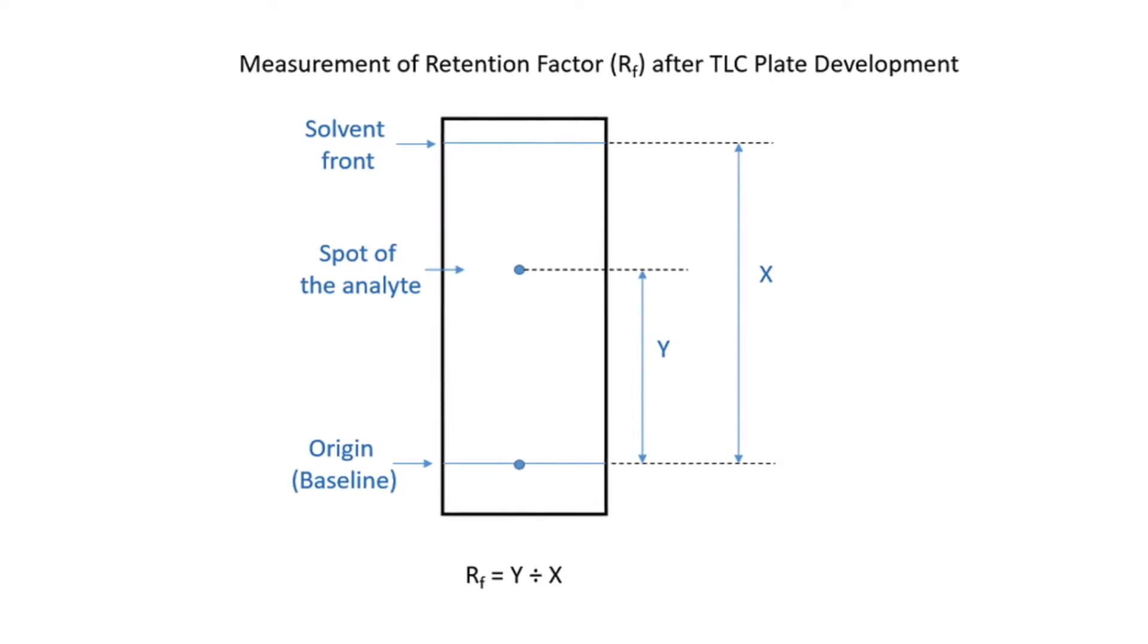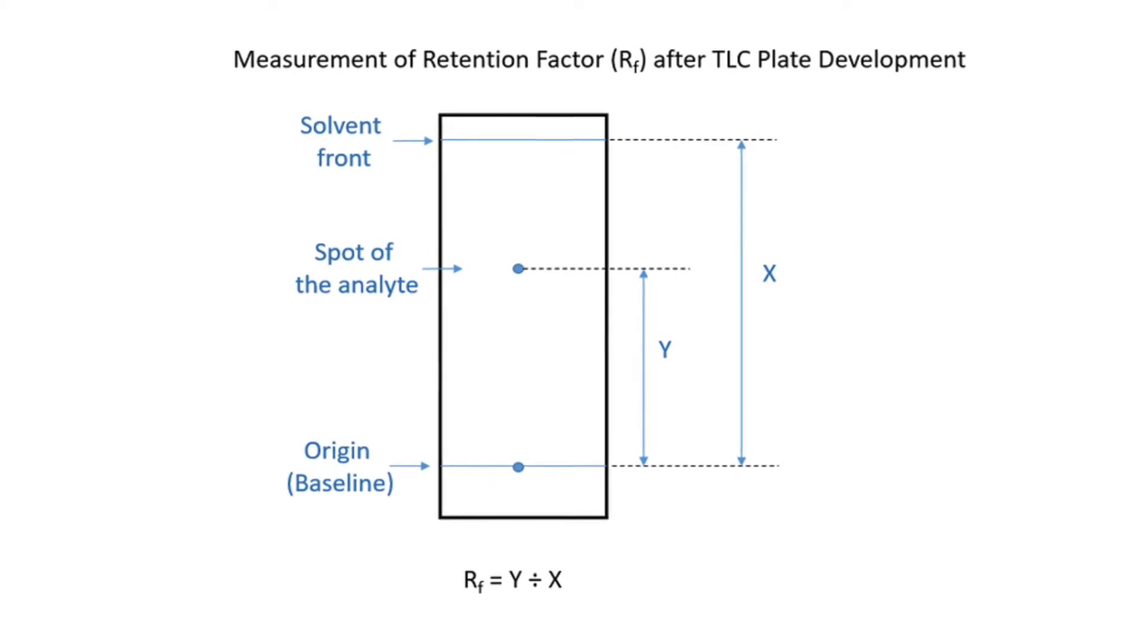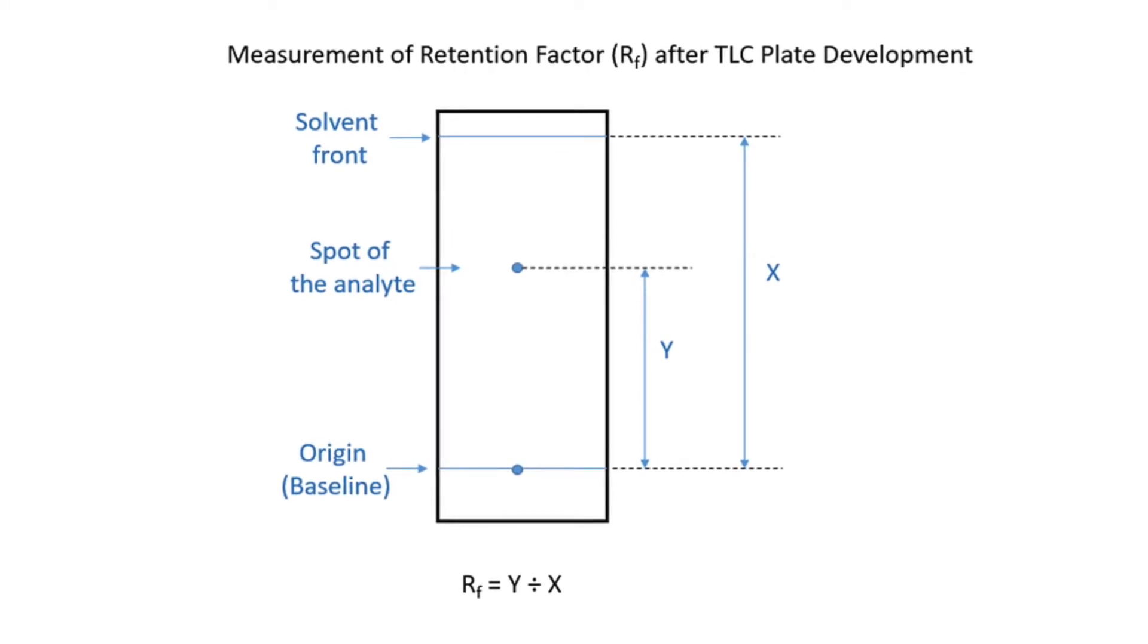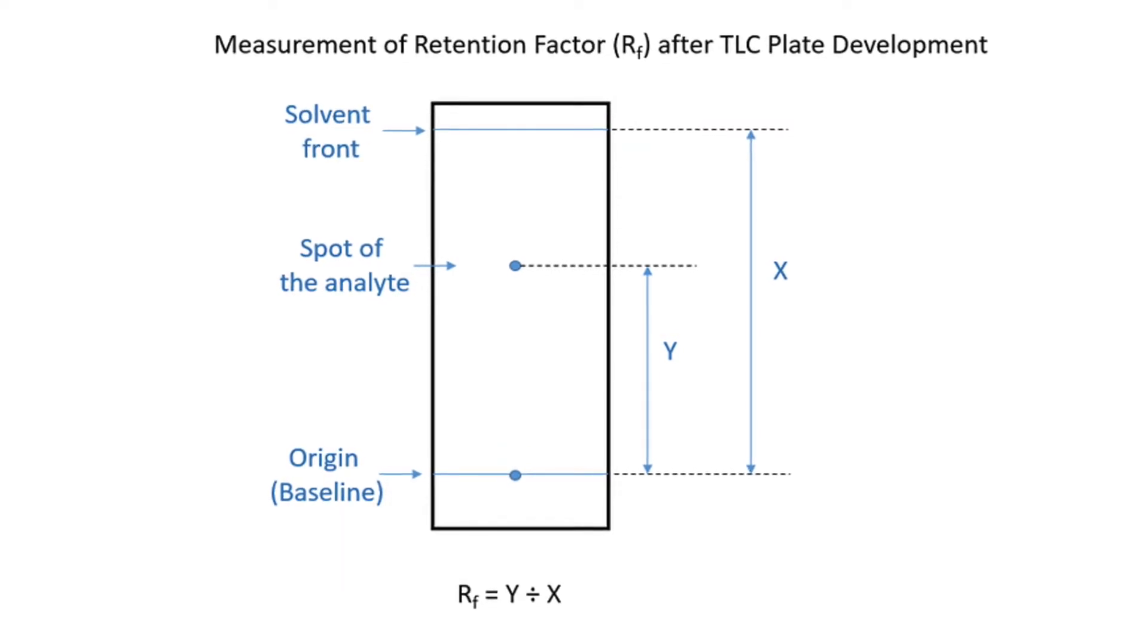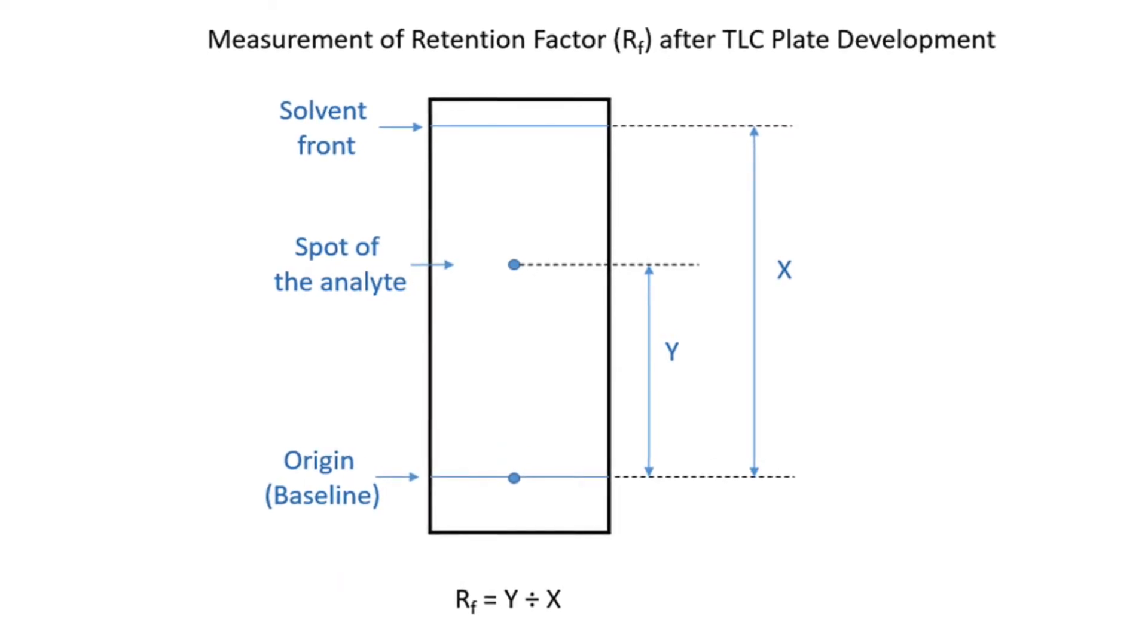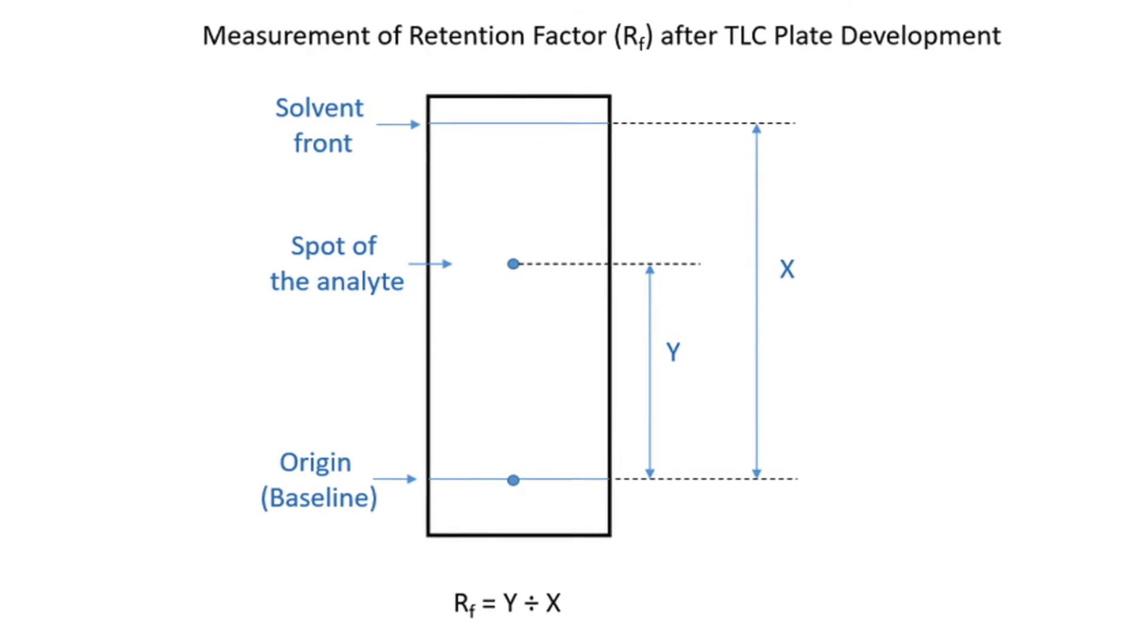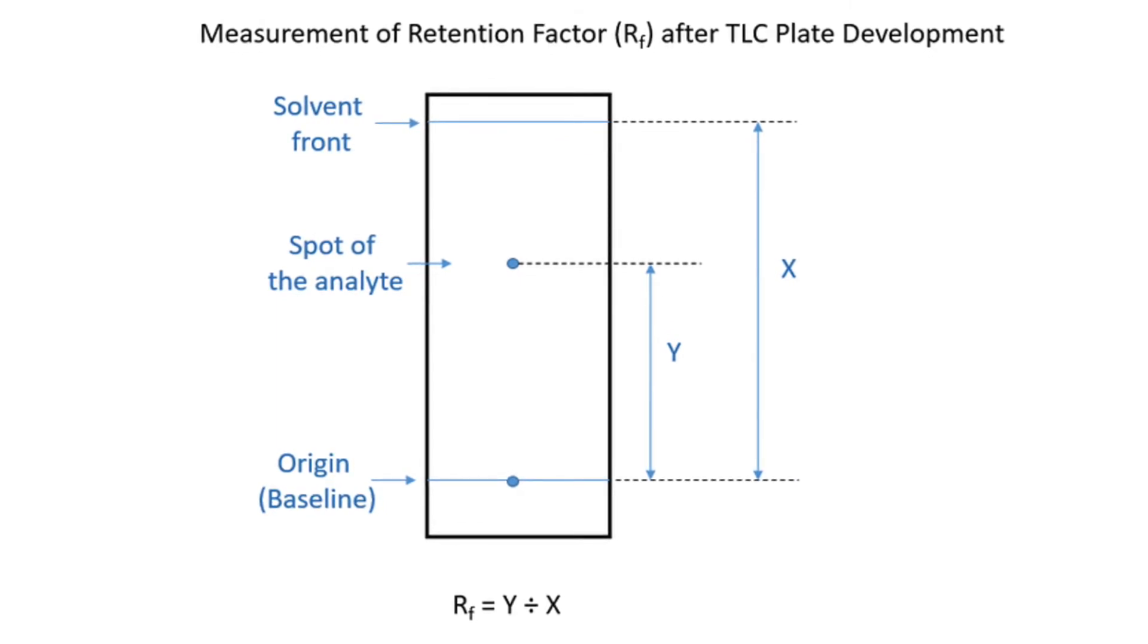Each spot has a retention factor, or RF, which is expressed as distance traveled by sample over distance traveled by solvent. The factors affecting retention factor are the solvent system, amount of samples spotted, absorbent, and temperature.